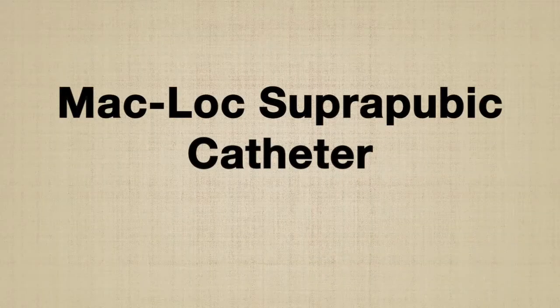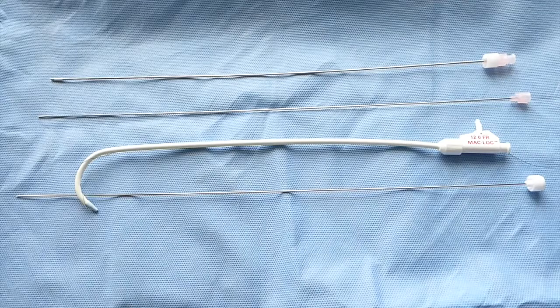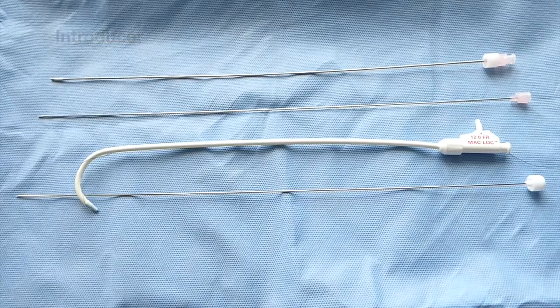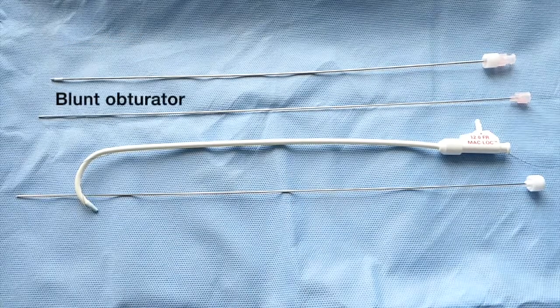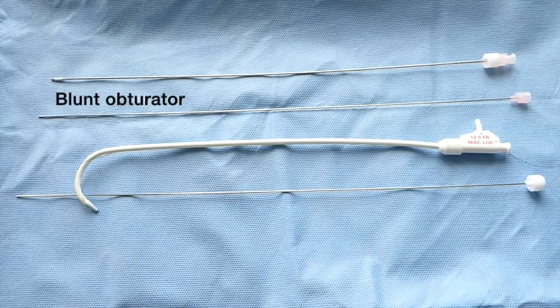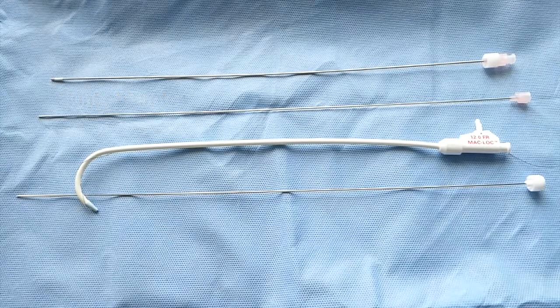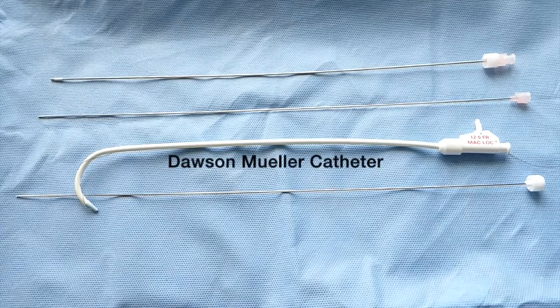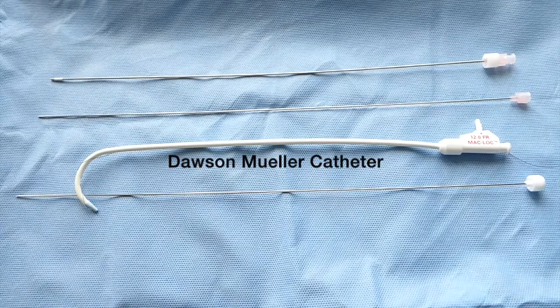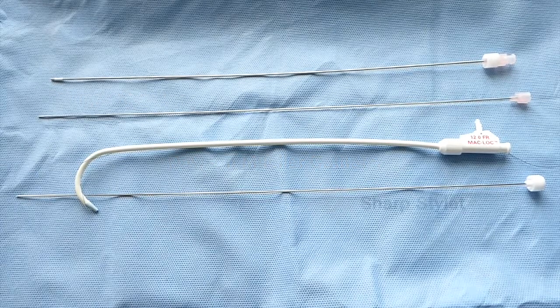The MAC-Lock suprapubic catheter has four parts: an introducer, a blunt loading obturator, the Dawson-Mueller catheter, and a sharp stylet.